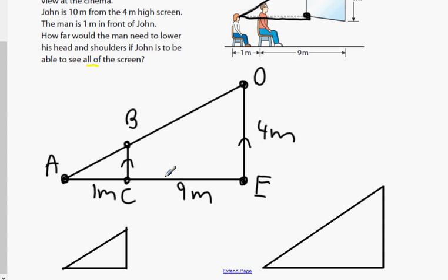If they are parallel, this angle here equals this one here. This angle here equals this one here. And this one here is a common angle. So that is angle X, angle X. This one here is this angle there and there. So we can see that all the angles are the same. They are equiangular or basically similar triangles.